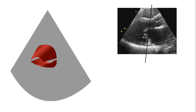Always make sure your data fits together. If, for example, the gradients are really high but planimetry gives a normal valve area, you probably measured the wrong plane — go back, find the narrowest part of the cone, and measure again.